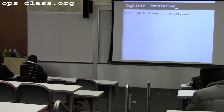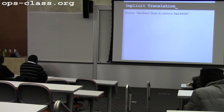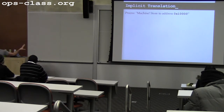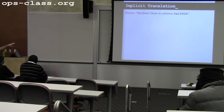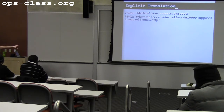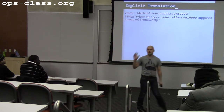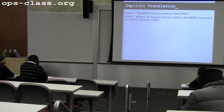So here's what happens instead. A process executes a store instruction — say, store to address 0x10000. That's a virtual address, and it's unique to this process. So we introduce a new protagonist: the MMU, or Memory Management Unit. The MMU is a piece of hardware on the kernel's team and under the kernel's control, and it's there to help make this process fast. The kernel is in charge of telling the MMU what to do.